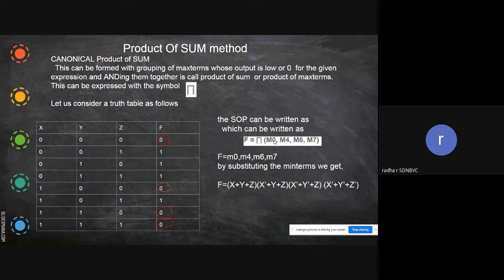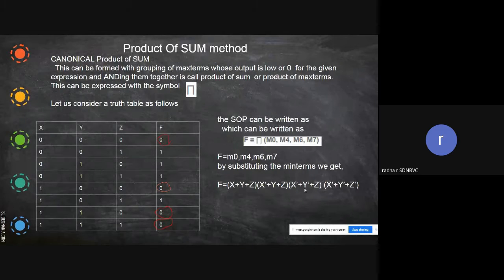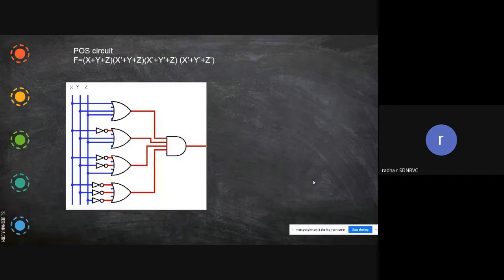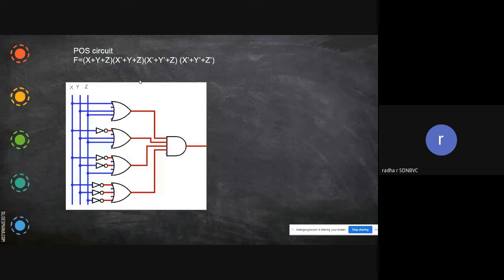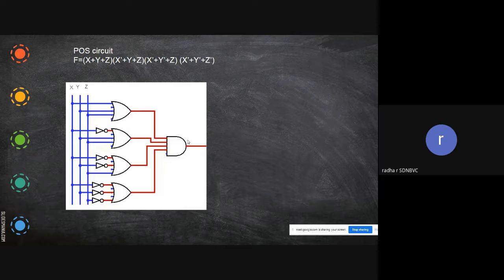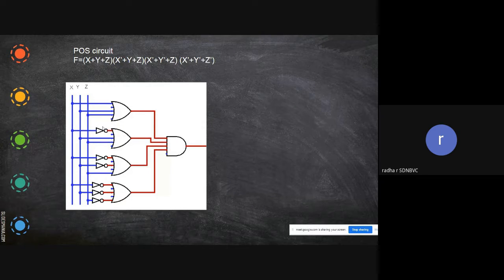The equivalents are M0, M4, M6, and M7 — these are called max terms. To draw the circuit diagram: for each sum term we need an OR gate, so four OR gates are needed, and all these are multiplied using a four-input AND gate. We've already seen how to draw the circuit for Sum of Products, so now let me explain the Product of Sums circuit diagram.